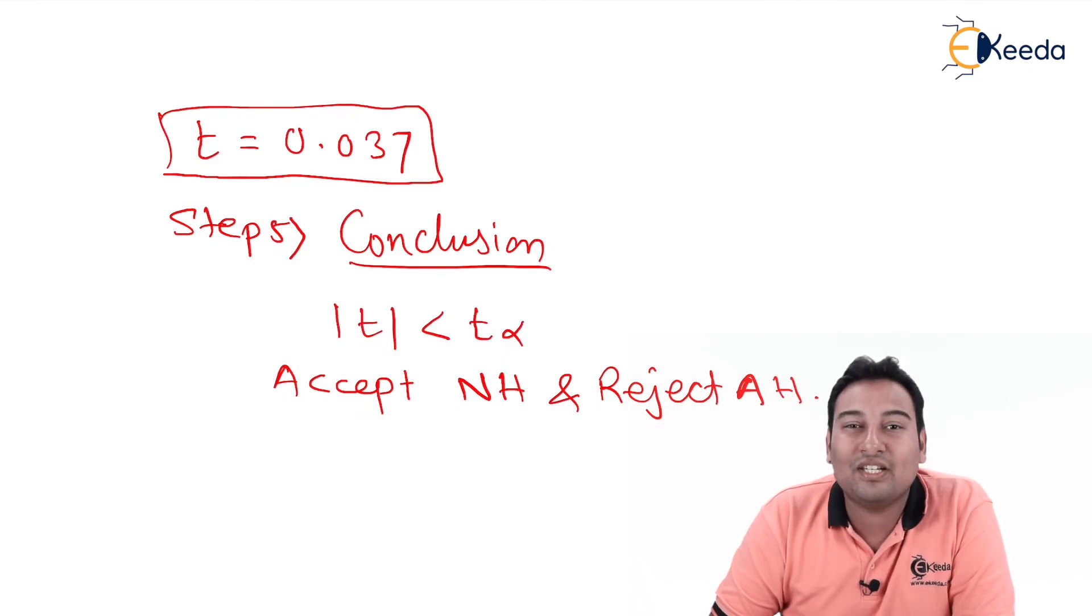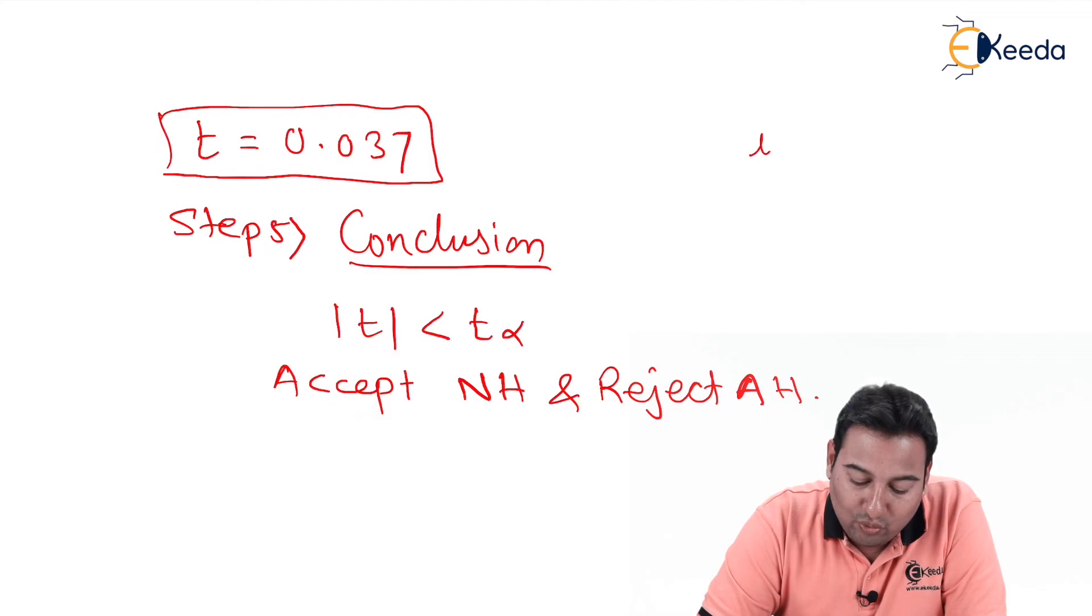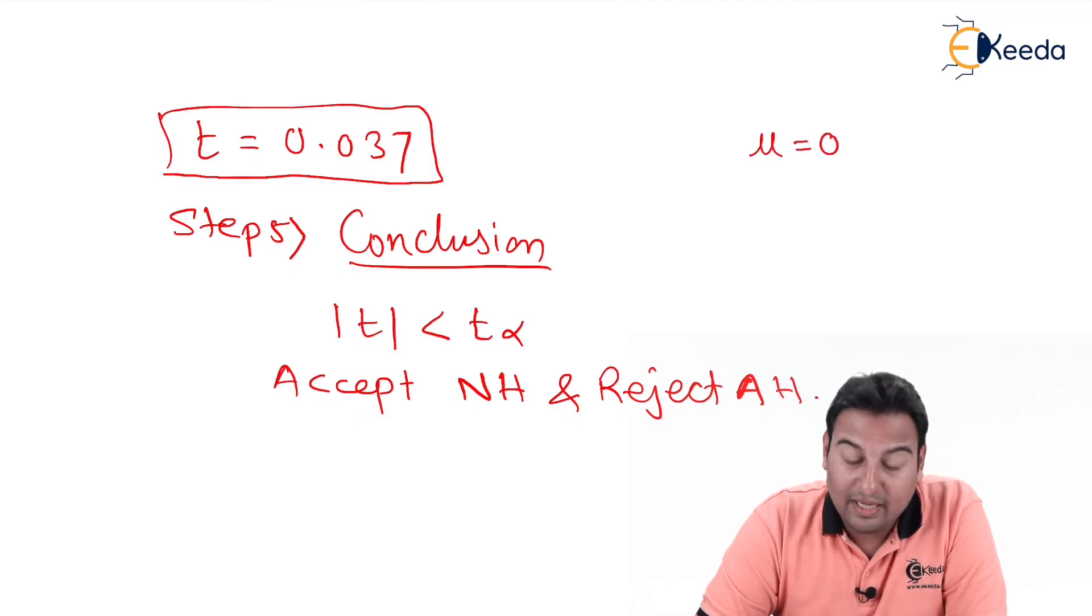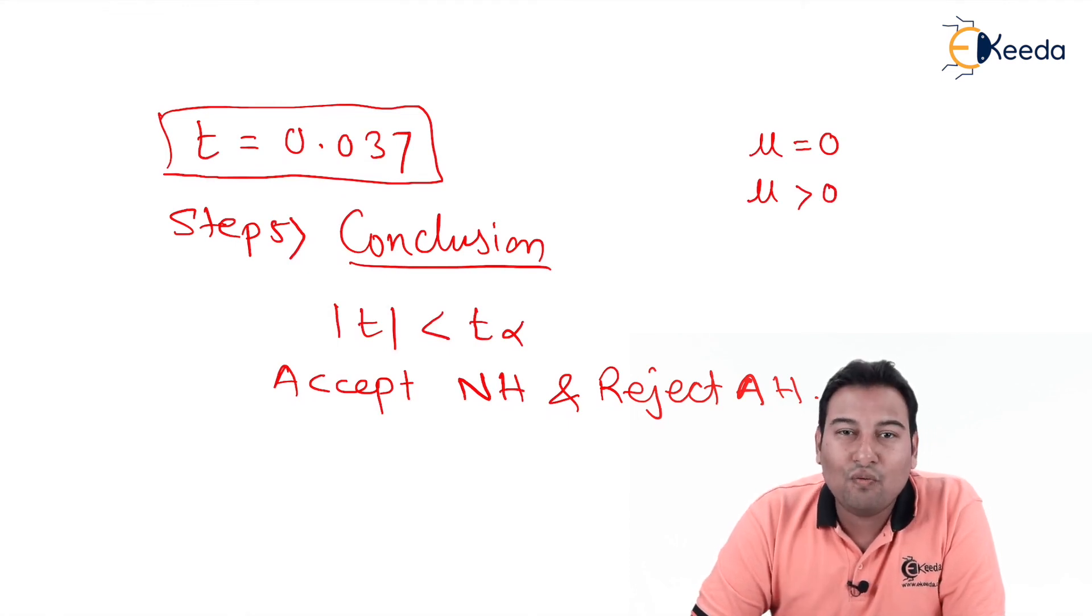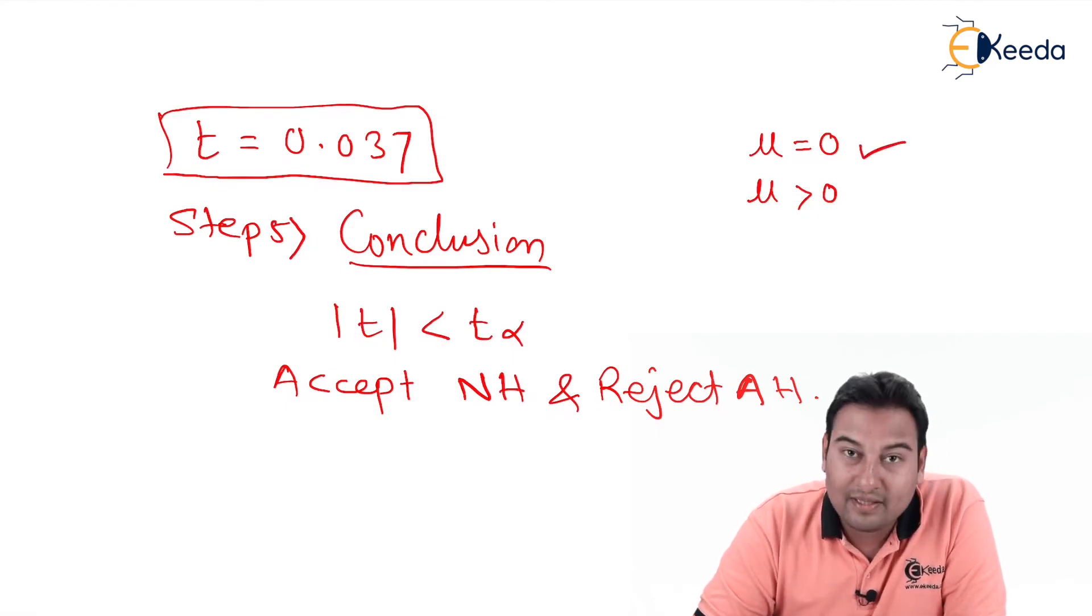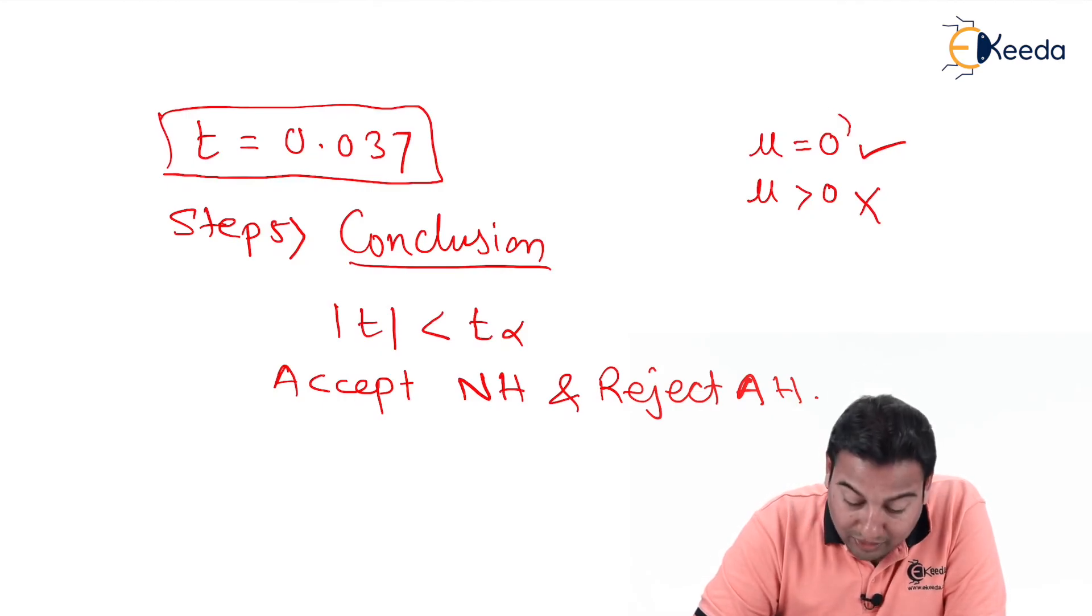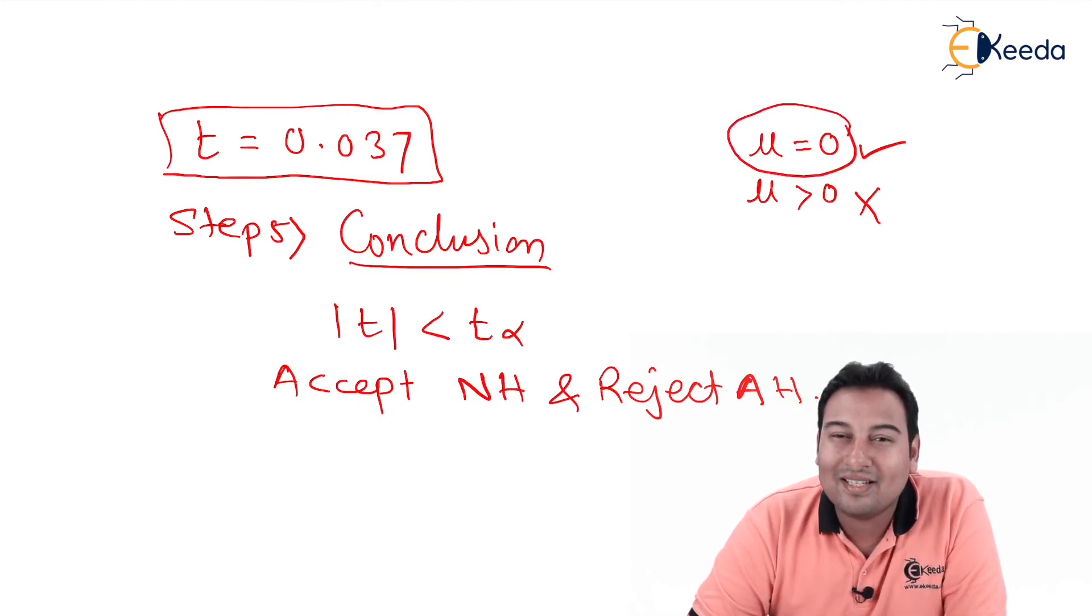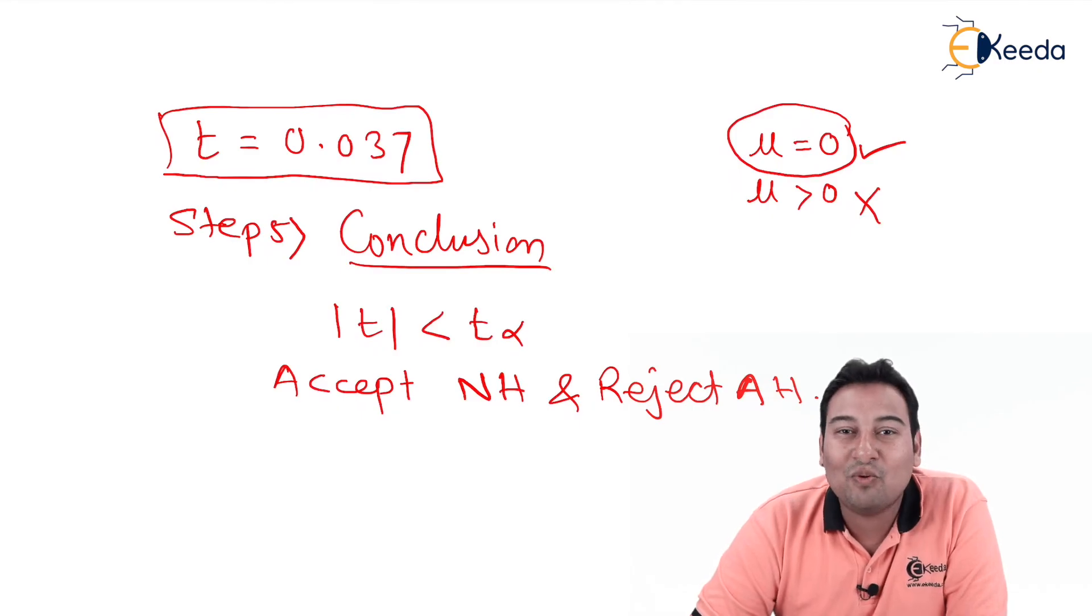What does this exactly mean with respect to our problem? In null hypothesis we took μ equals 0. In alternate we took μ greater than 0, meaning increase, benefited by coaching. We accept null hypothesis and reject alternate hypothesis. That means you're accepting μ equal to 0. What does that mean? μ equal to 0 means no change. That means students are not benefited from coaching.